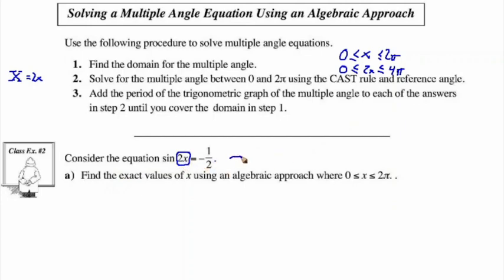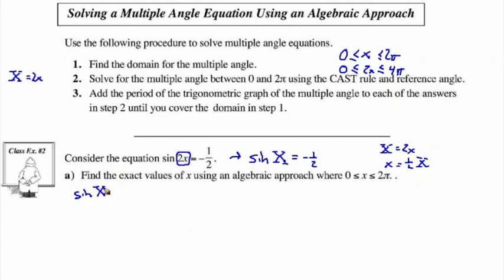We have sine 2x equal to negative one-half. We translate this so we're really solving sine X equals negative one-half. Then we say the big X equals 2x, meaning little x is always half of big X. To solve sine X equals negative one-half, the reference angle is the sine inverse of one-half, which we recognize as the special angle 30 degrees or pi over 6.